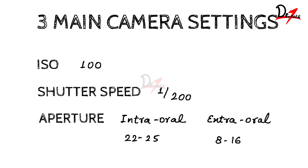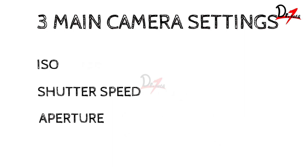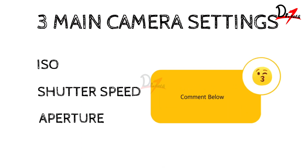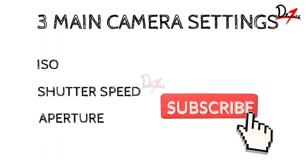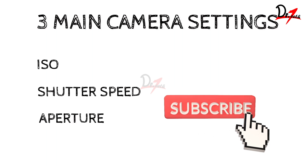To conclude: keep ISO at 100, shutter speed at 1/200 of a second, and f-number large — around 22 to 25 for intraoral and 8 to 16 for extraoral images. If you want me to cover more details on the flash system — ring flash vs. twin flash, which brand to buy — let me know in the comments below. I can also dedicate a video to how to take photographs of the patient. Let me know in the comments. See you in the next video!